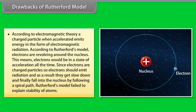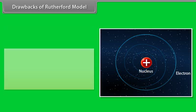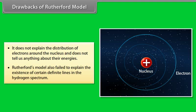Drawbacks of Rutherford's model: (1) According to electromagnetic theory, an accelerating charged particle emits energy. Since electrons revolve around the nucleus, they are always accelerating, so they should emit radiation, slow down, and spiral into the nucleus — Rutherford's model failed to explain atomic stability. (2) It does not explain the distribution of electrons or their energies. (3) It failed to explain the existence of definite lines in the hydrogen spectrum.